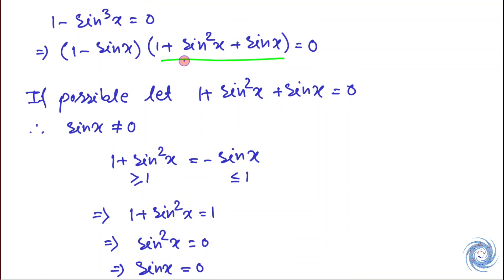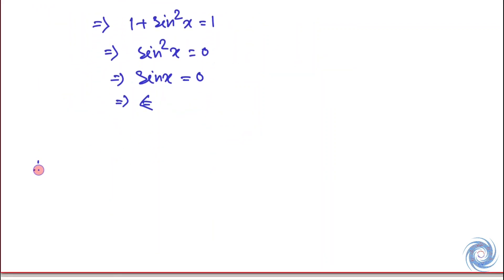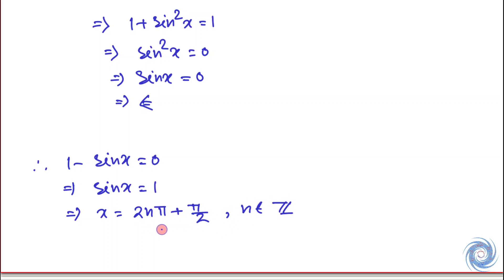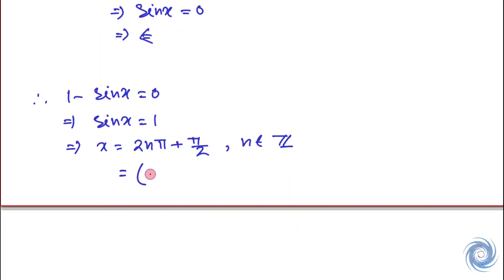Therefore, the quantity 1 + sin²x + sin x is always non-zero, meaning 1 minus sin³x equals zero implies sin x equals 1. From here we have x equals 2nπ + π/2, where n belongs to ℤ. This can be written as x = (4n + 1)π/2, where n belongs to ℤ.